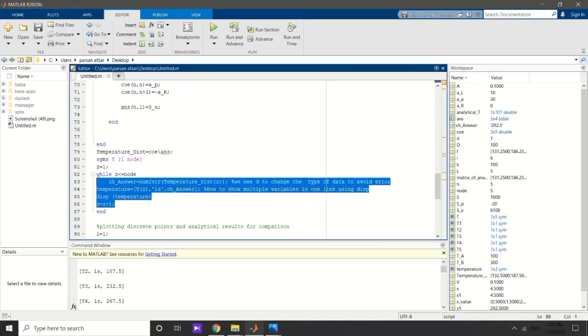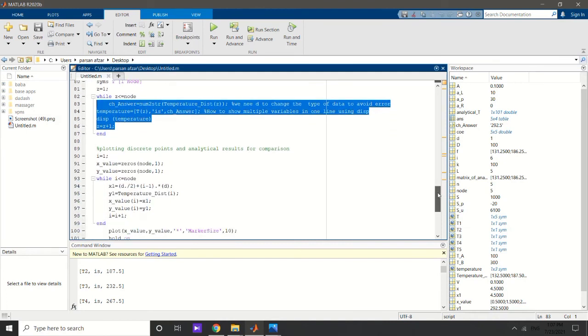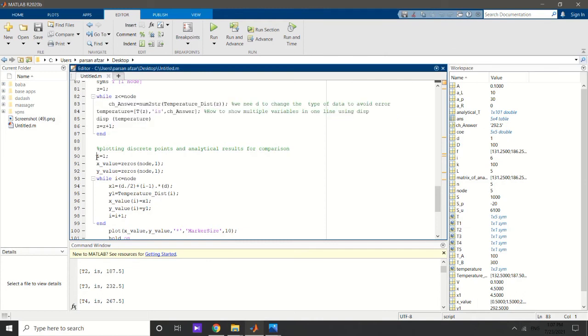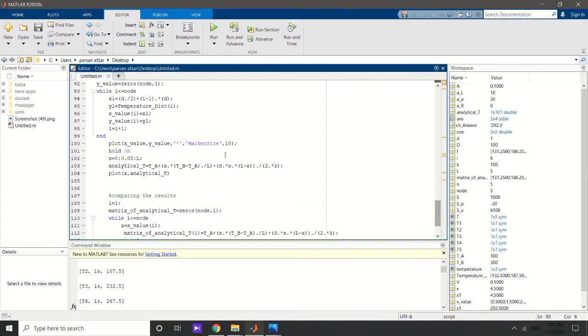T2 is, T3 is, and all of the temperatures are showed in this way because of using this function into this while loop. Then I'm going to show the discrete values - the temperatures in a Cartesian coordination. First, I will define a matrix for x values and y values to store the equations in it.